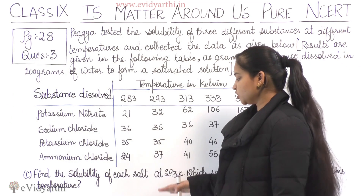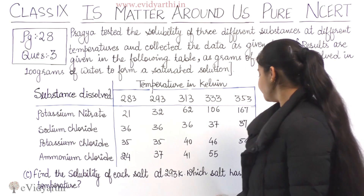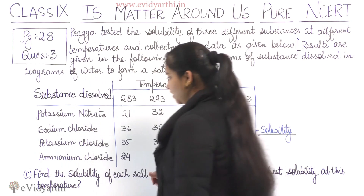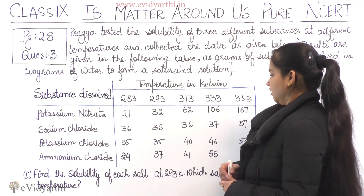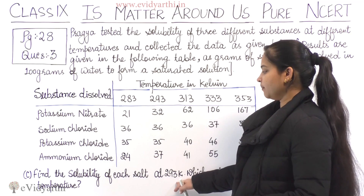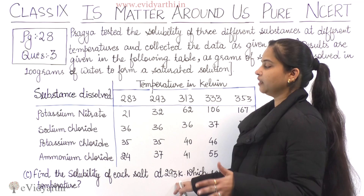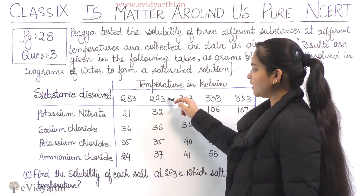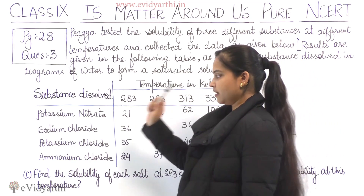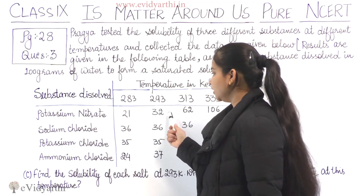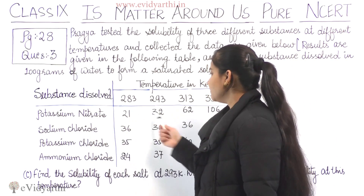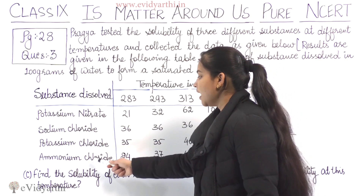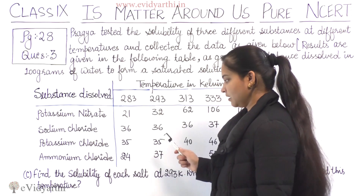Part C: Find the solubility of each salt at 293 Kelvin and identify which salt has the highest solubility at this temperature. The solubilities at 293 Kelvin are: potassium nitrate — 32 grams, sodium chloride — 36 grams, potassium chloride — 35 grams, and ammonium chloride — 37 grams.